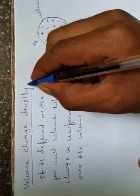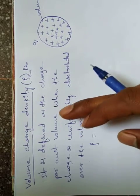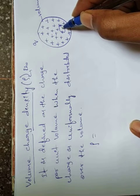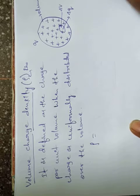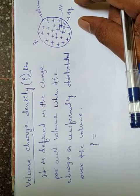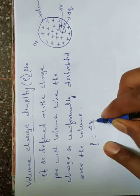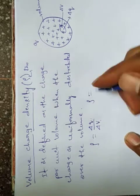Volume charge density is indicated with the symbol rho (ρ). So rho is defined as charge per unit volume. Suppose we consider a small region having a certain volume and a certain charge. That small charge is delta Q and the small volume is delta V. So volume charge density is delta Q divided by delta V — charge per unit volume in that region.